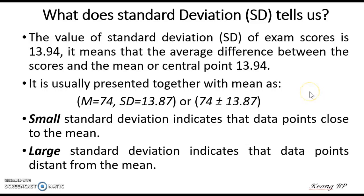The standard deviation value is usually presented together with the mean. There are two ways of presenting the standard deviation and mean value. In general, a small standard deviation indicates that the data points are close to the mean, while a large standard deviation indicates that the data points are distant from the mean.